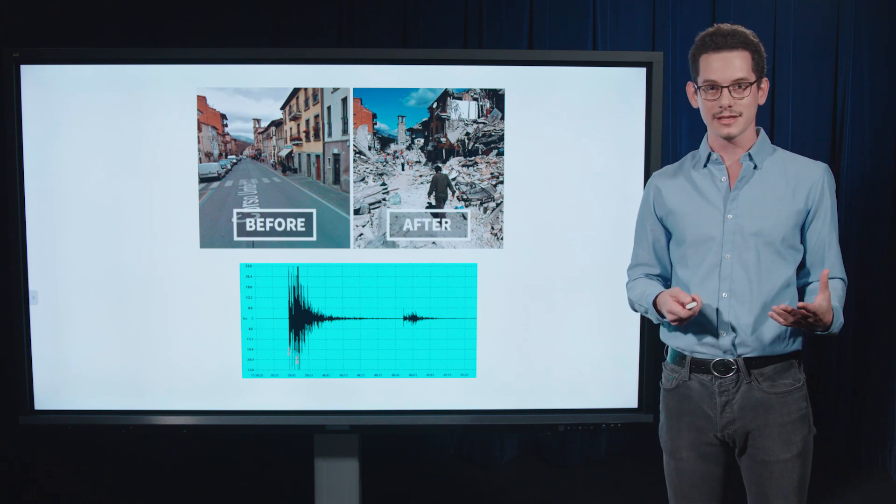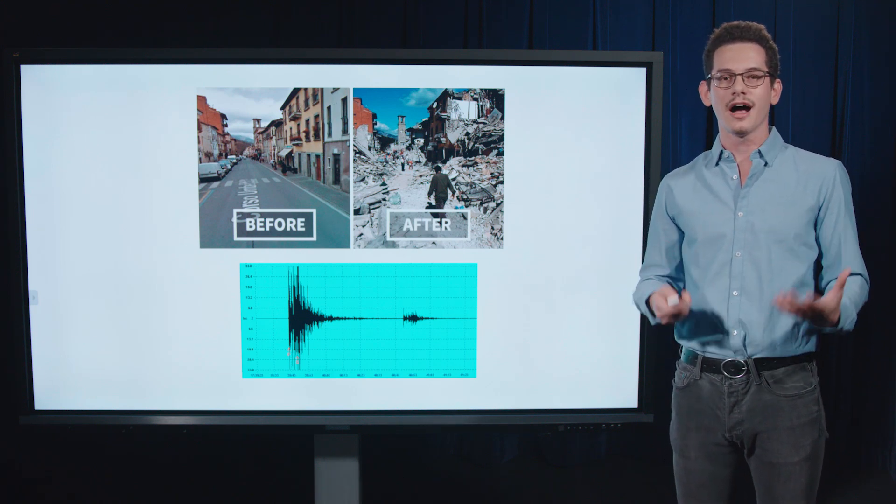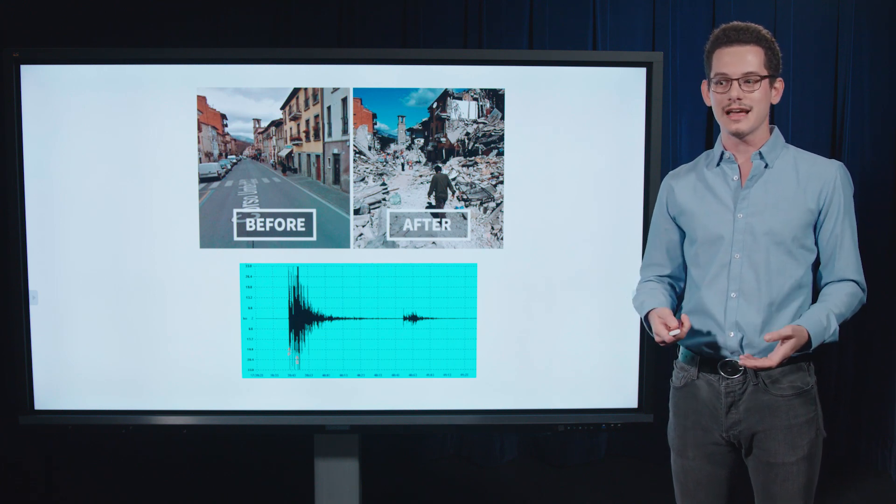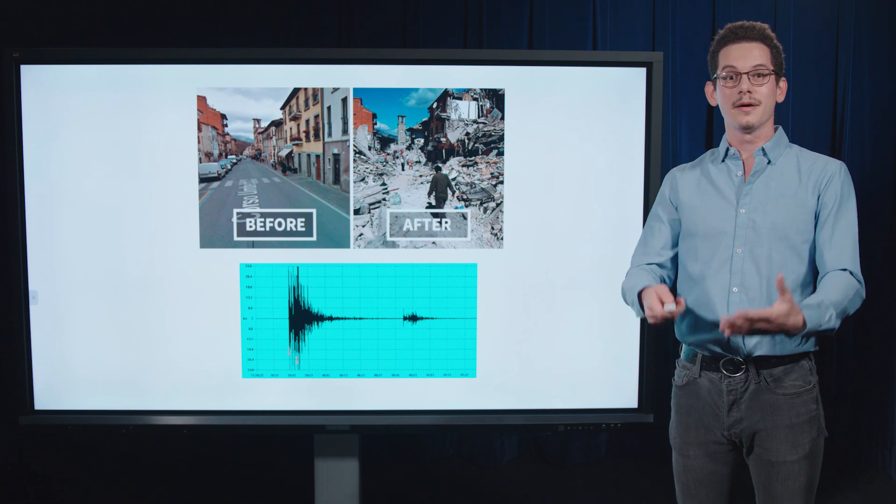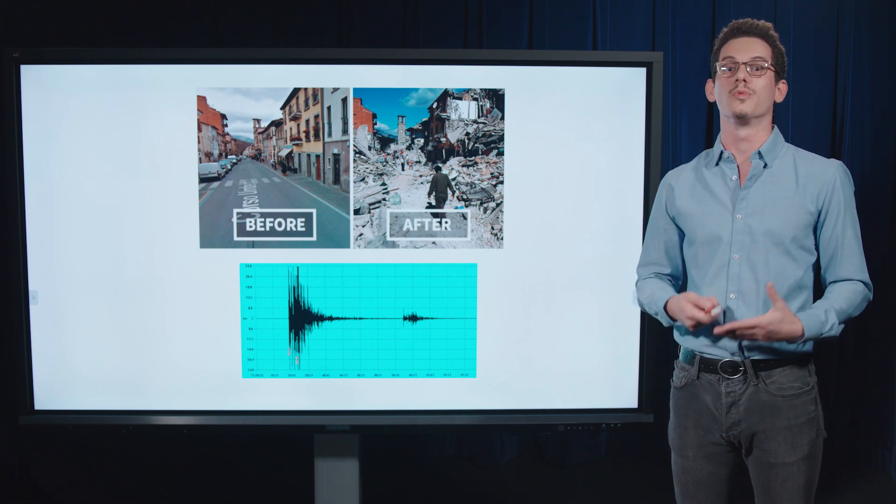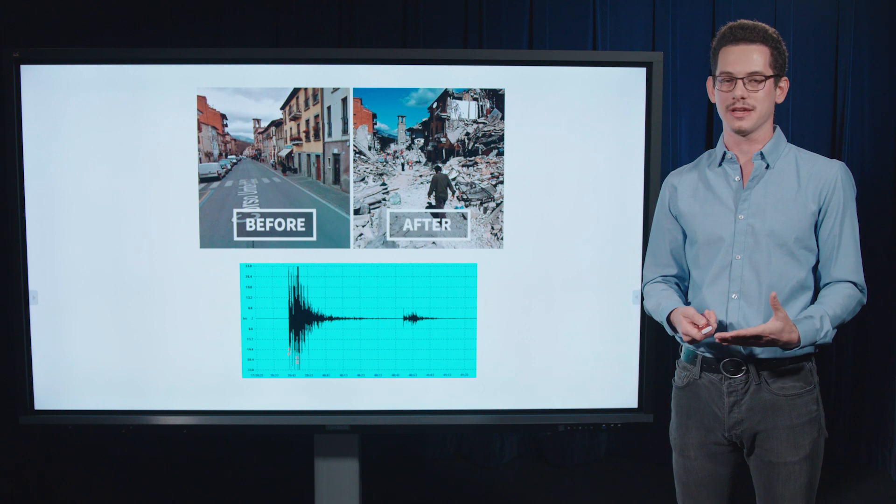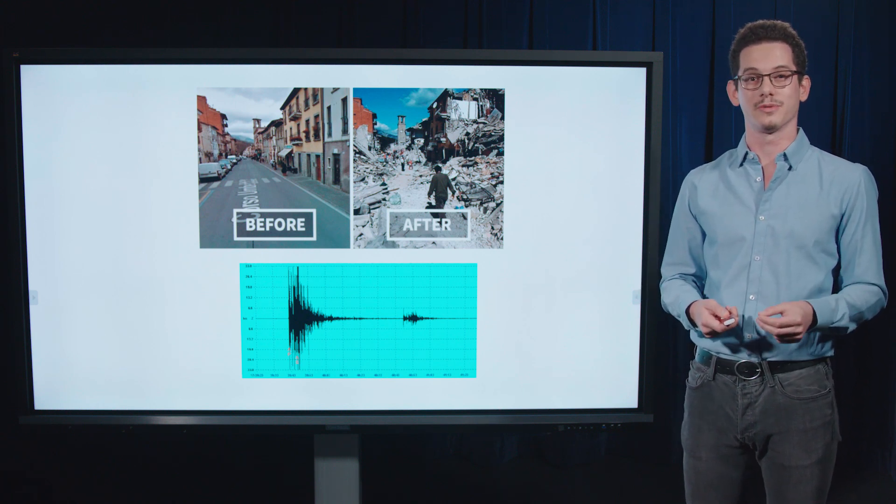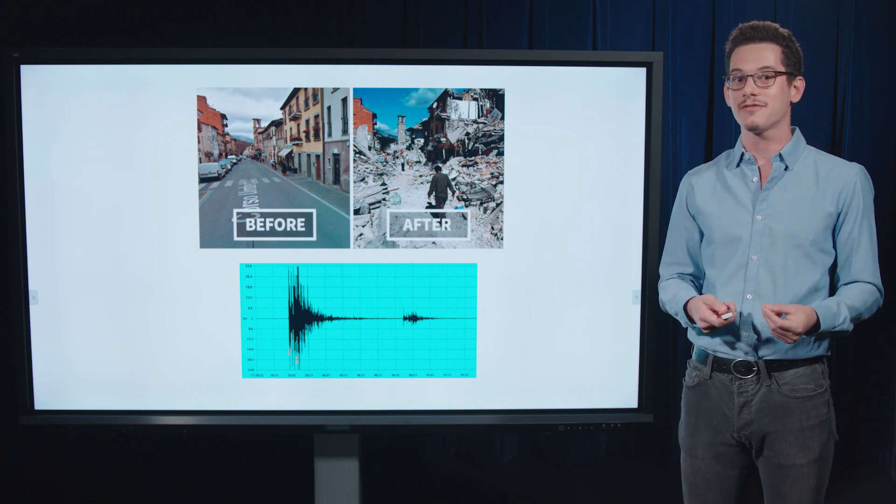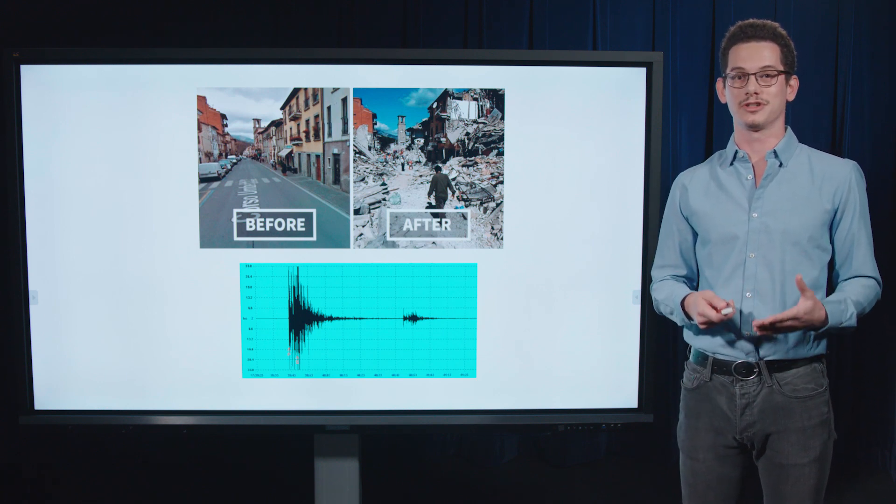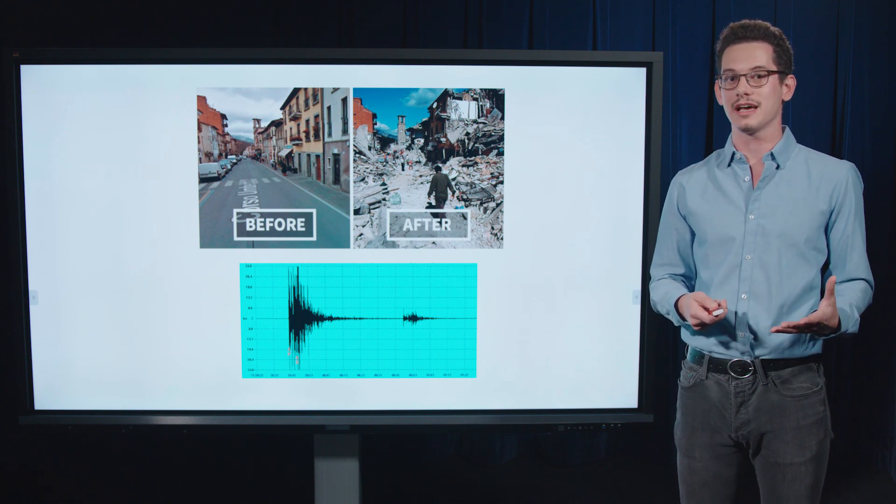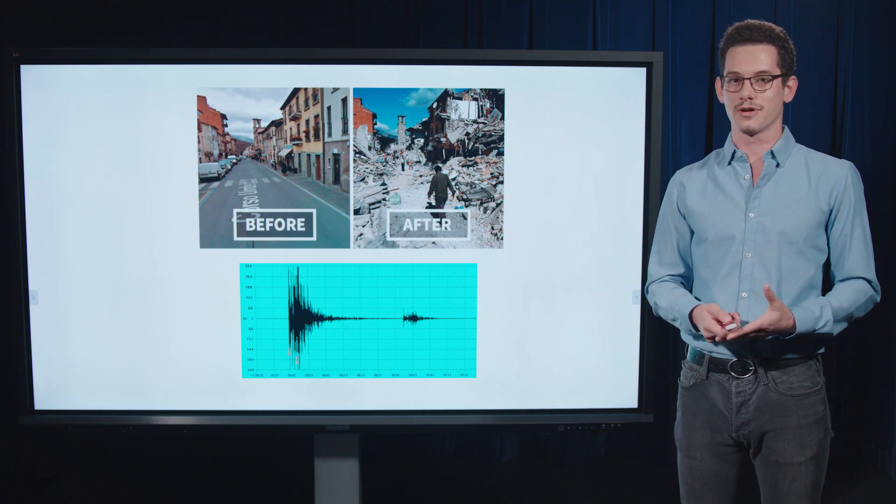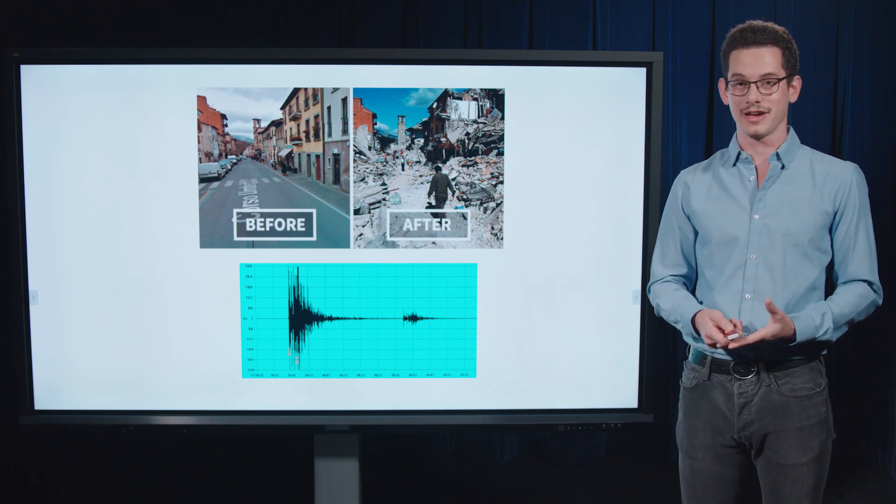So earthquakes are just another kind of natural hazard. But one thing that makes earthquakes special is that after a big earthquake, subsequent earthquakes are more likely. So these aftershocks can happen. And even though we don't have methods that really work for earthquake prediction, we do have good means of aftershock forecasting. And in fact, the USGS has released automated aftershock forecasting for aftershocks in seismically active areas.